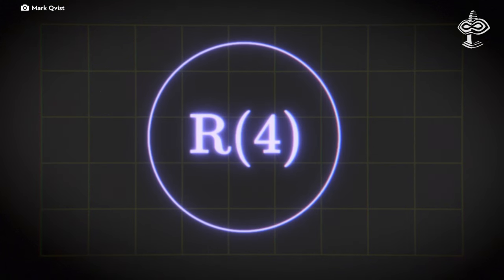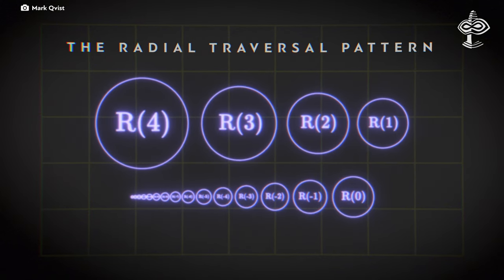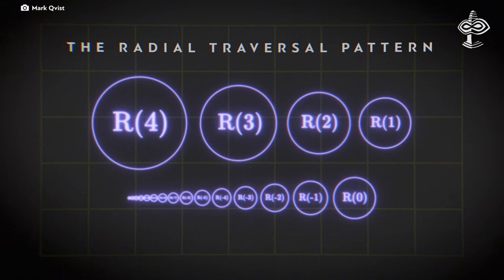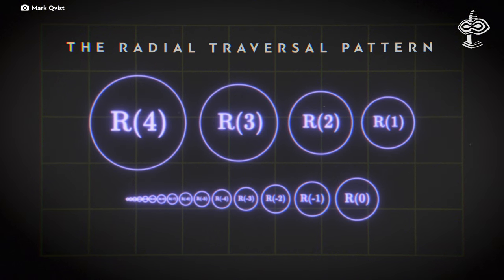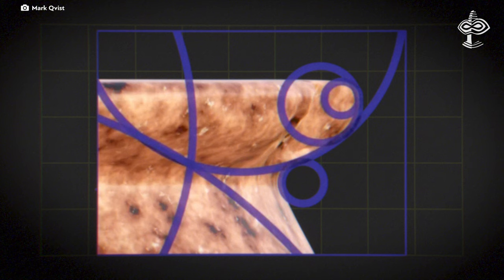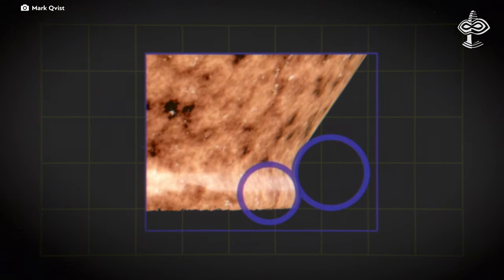Their discovery, named the radial traversal pattern, is a series of circles or arcs that define most of the artifact's features, especially its circular elements, interrelated with remarkable consistency and precision.